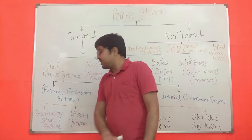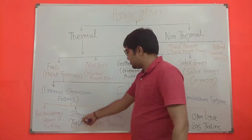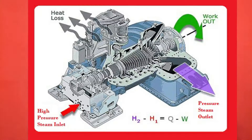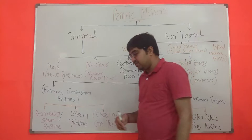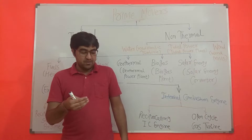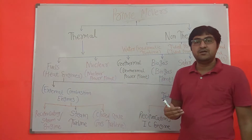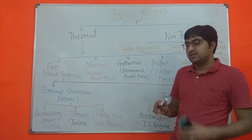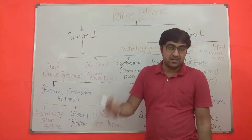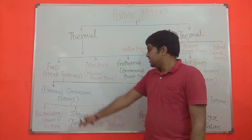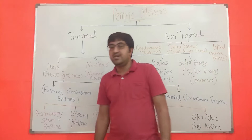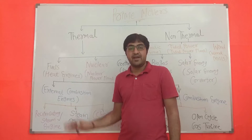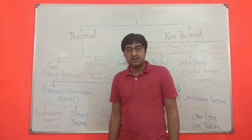The second subtype is the steam turbine. Thermal power plants work on the Rankine cycle. In a coal-based thermal power plant, coal is used as fuel. A boiler is used to produce steam by supplying heat energy, and this steam is used to rotate the turbine — hence it is called a steam turbine. This is another example of an external combustion engine.